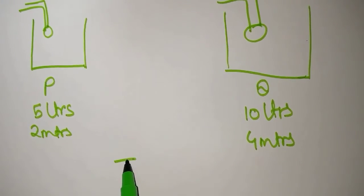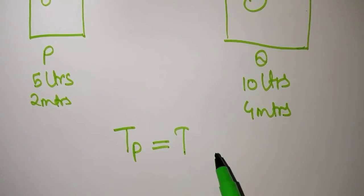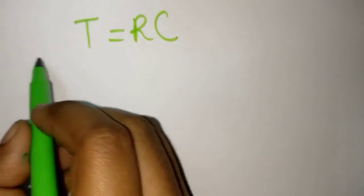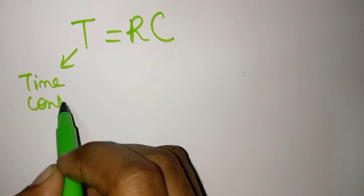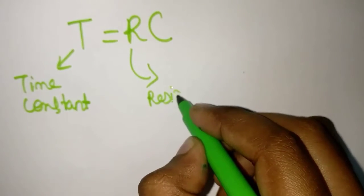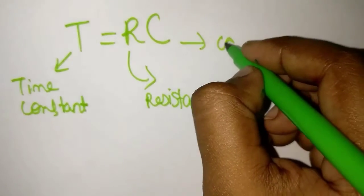The time taken to fill P is equal to the time taken to fill tank Q. The same can be observed in capacitor where the formula is given by T equals to RC in which T is the time constant, R is the resistance and C is the capacitance.